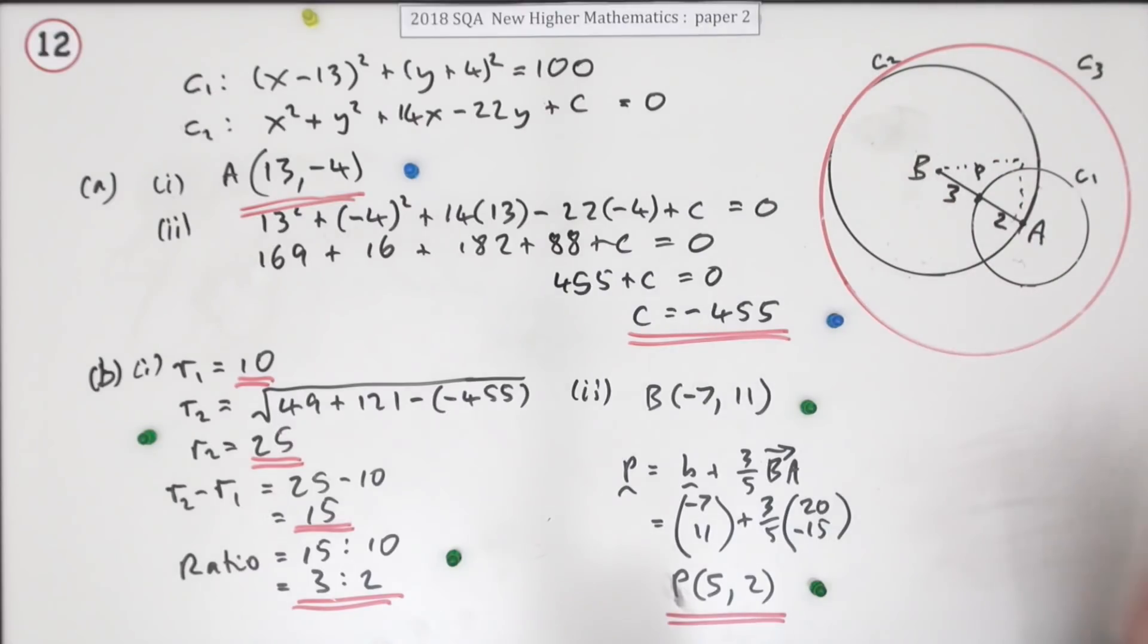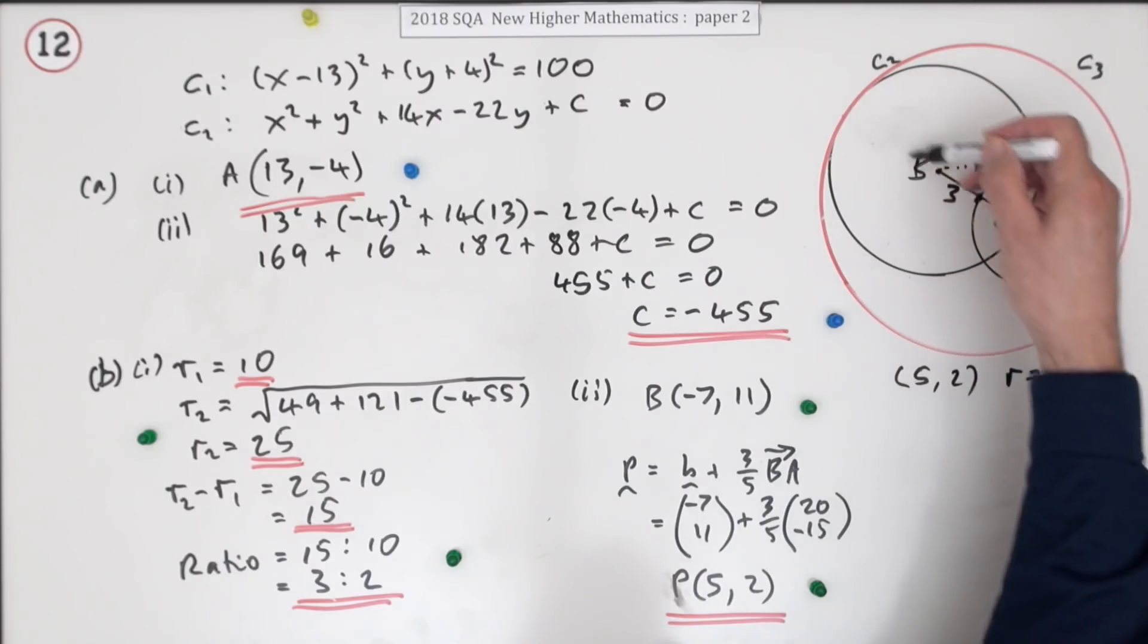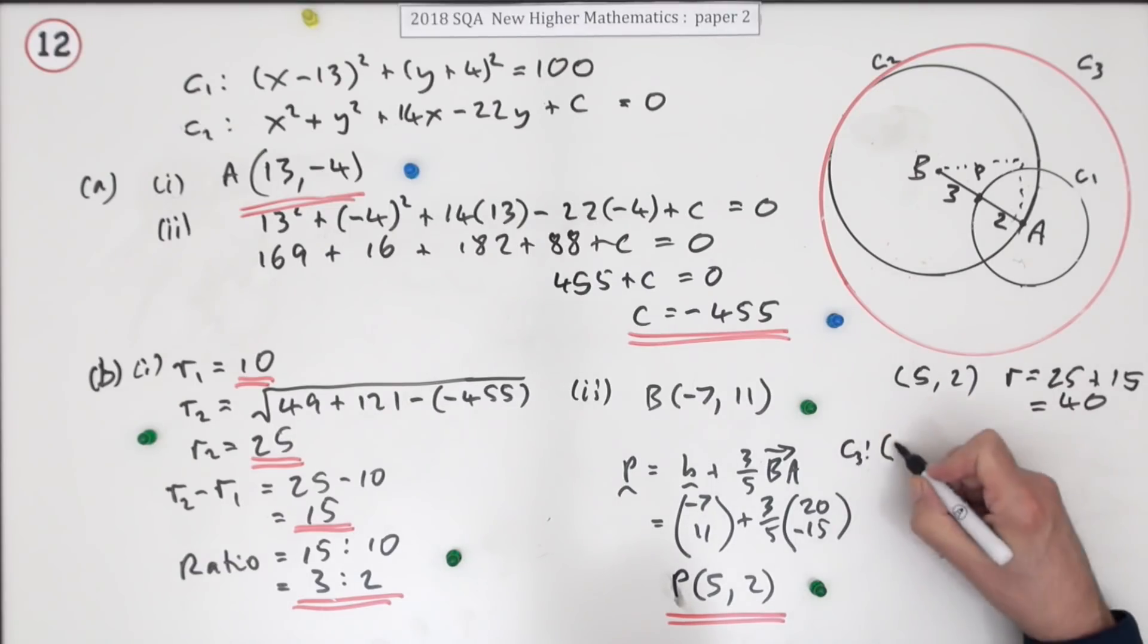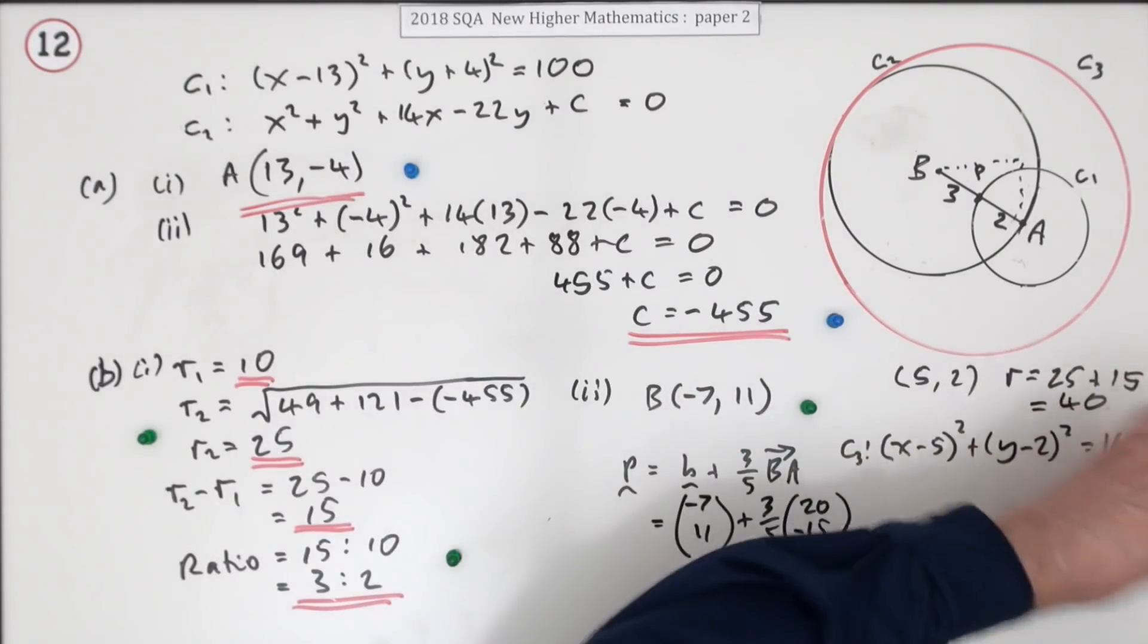What's the equation of C3? You know its center is at (5, 2), need to figure out its radius. The radius of the larger one was 25, the leftover portion was 15, which makes that 40. So C3 will be (x - 5)² + (y - 2)² equals the square of 40, which is 1600 for that mark.